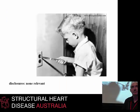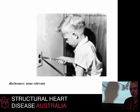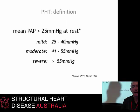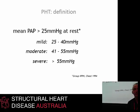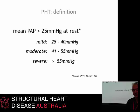I have no disclosures to make relevant to this talk or to my next talk on pulmonary embolism. For purposes of this talk, I'm really going to be focusing on severe pulmonary hypertension patients that have got a mean pulmonary arterial pressure of more than 55 mmHg.